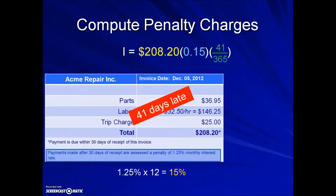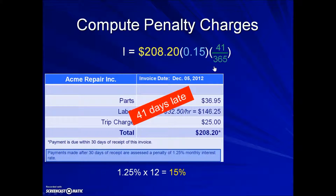Replacing the variables with the values, we end up with a principal of $208.20 times our interest rate expressed as a decimal, times our time expressed in terms of a year. The resulting interest penalty is $3.51.